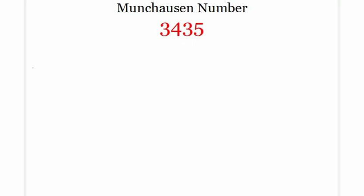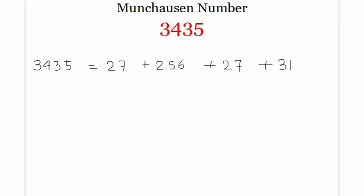We can actually write 3435 equal to 27 plus 256 plus 27 plus 3125. So 3435 equals 27 plus 256 plus 27 plus 3125, which is equal to 3 to the power of 3, plus 4 to the power of 4, plus 3 to the power of 3, plus 5 to the power of 5.